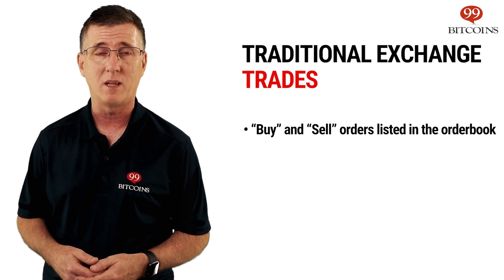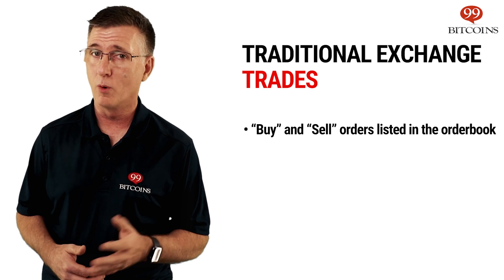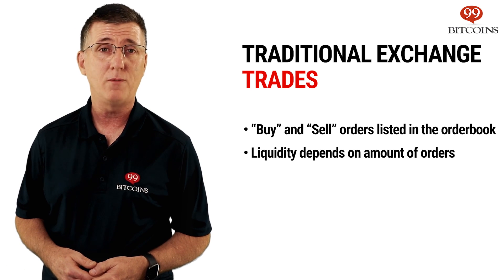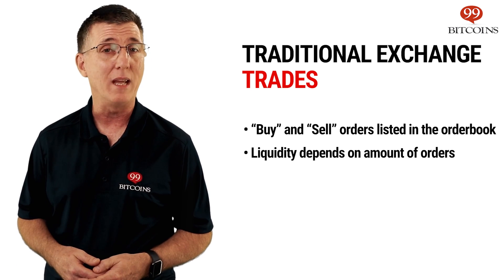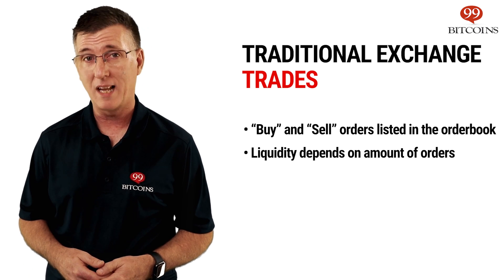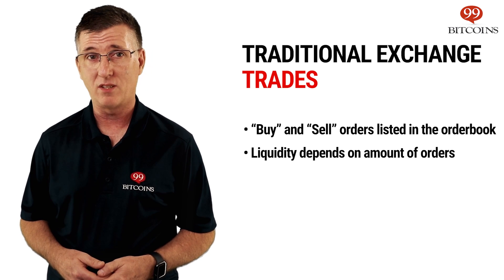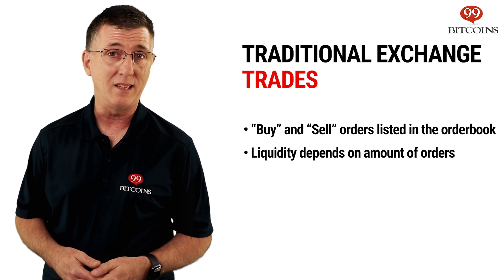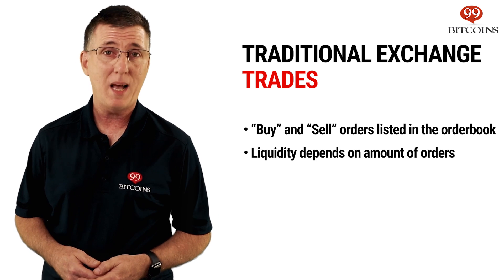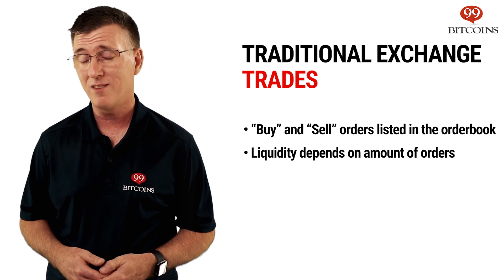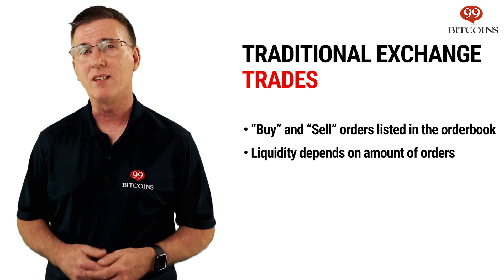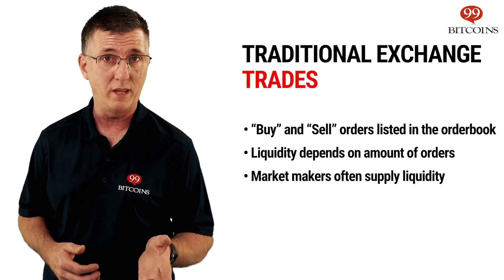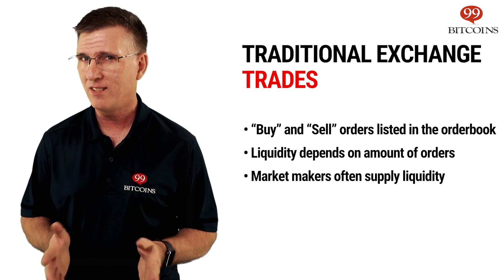In a traditional exchange, buyers and sellers set their price expectations as buy and sell orders inside the order book. The more buyers and sellers an exchange has, the larger its order book and the more liquid the exchange is said to be. Imagine there are only two buyers and two sellers on a certain exchange — it would be very hard for any trade to get executed. Without liquidity, the exchange is practically dead. It's the same as having a shopping mall with very few stores or customers. Liquidity is such an important criteria that some exchanges use external services called market makers that are willing to buy and sell at all times, creating constant liquidity.